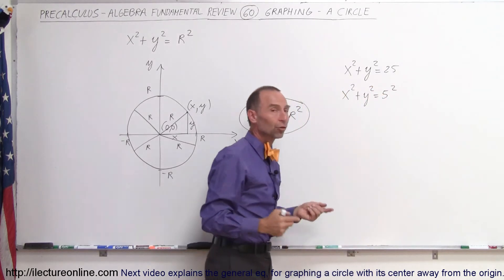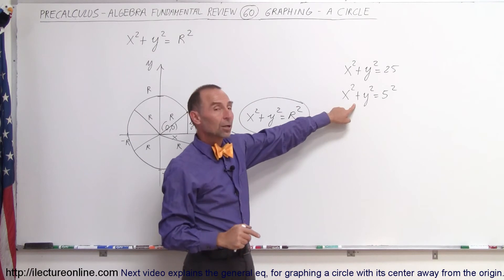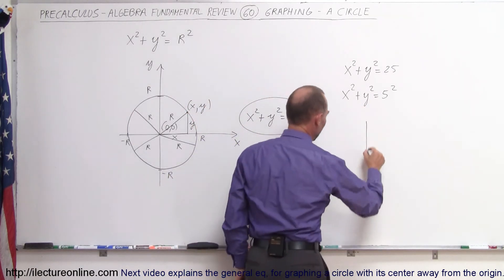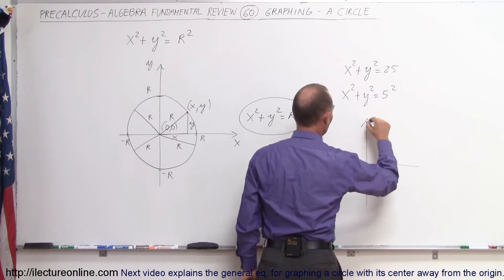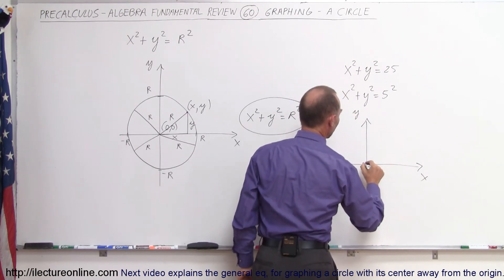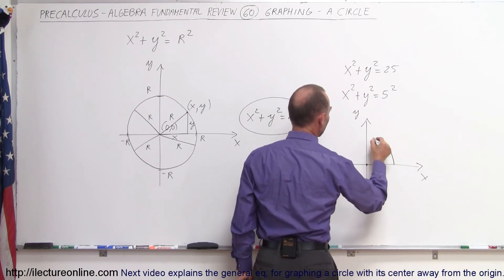So now we have a circle with the center at the origin and with the radius equal to 5. So if we want to graph that, it's going to look like this. Here's our y-axis, there's our x-axis, there's the center of the circle, and here's our circle.